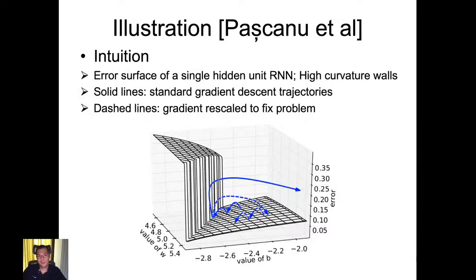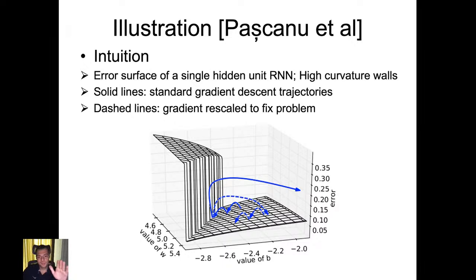In practice, to train a recurrent network we use truncated BPTT. The sequence is processed one time step at a time, and periodically we perform k1 time steps of BPTT. For a fixed number of time steps k2, we perform the update backwards. One of the difficulties was studied by Razvan Pascanu, now at Google in London, who found that the error surface of such models has high curvature walls — points where the loss has a very steep descent — so applying standard gradient descent can throw you off the minimum.